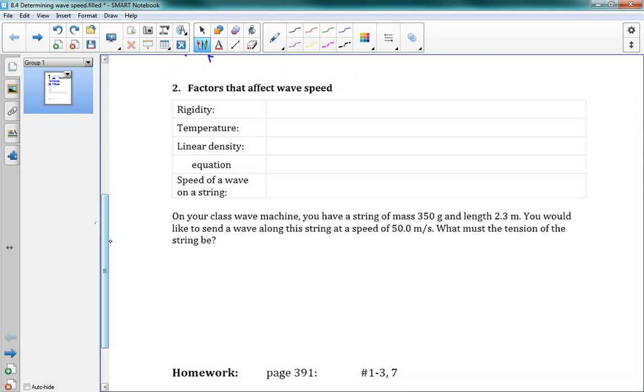Now, part two here, we have just a few pieces of information. We have factors that affect wave speed. So, the first thing that affects wave speed is rigidity. So, this is how rigid the medium is. So, we'll say that the more stiff it is, the more stiff or the more rigid,